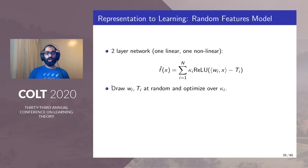Then we draw w_i and t_i at random over some tractable distribution. For instance, w_i could be uniform over the sphere and t_i could be uniformly random from -1 to 1. And then we optimize only over κ_i, that is the recombination weights.